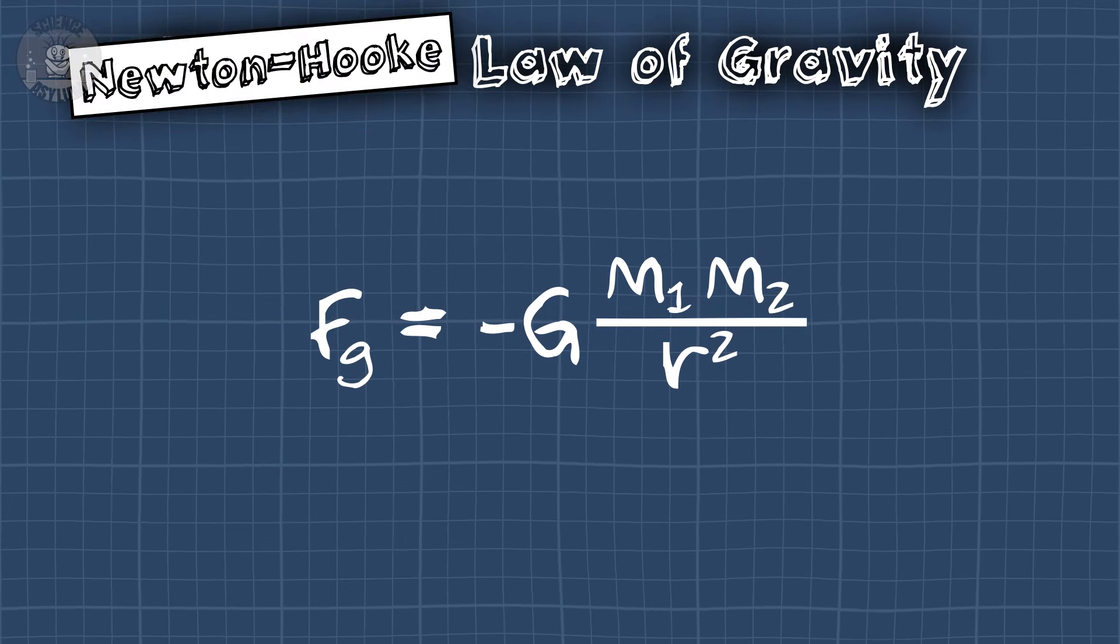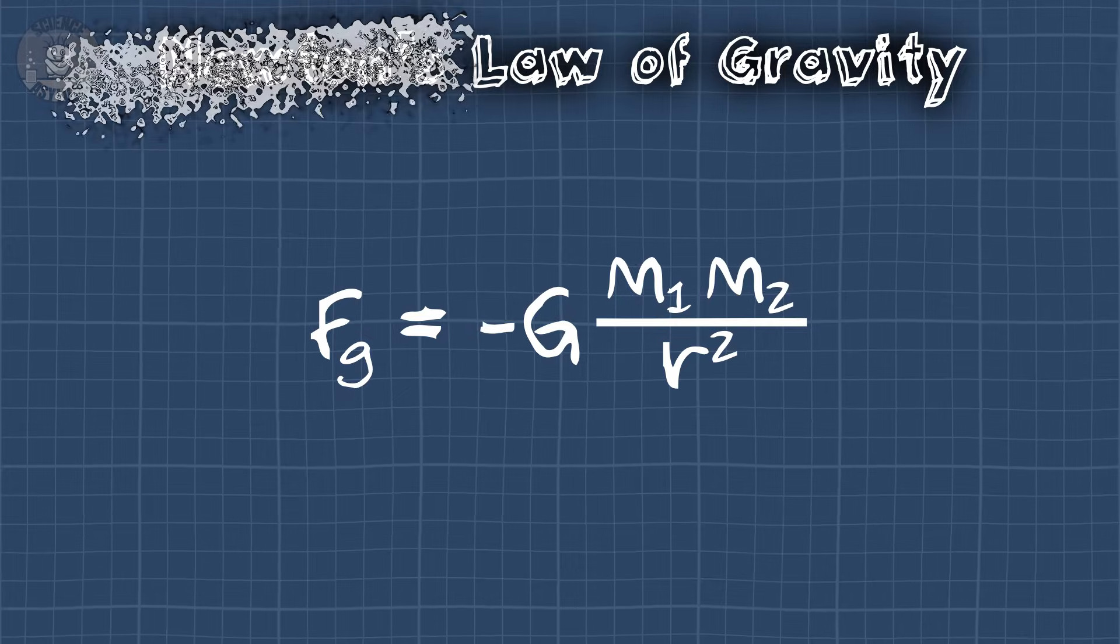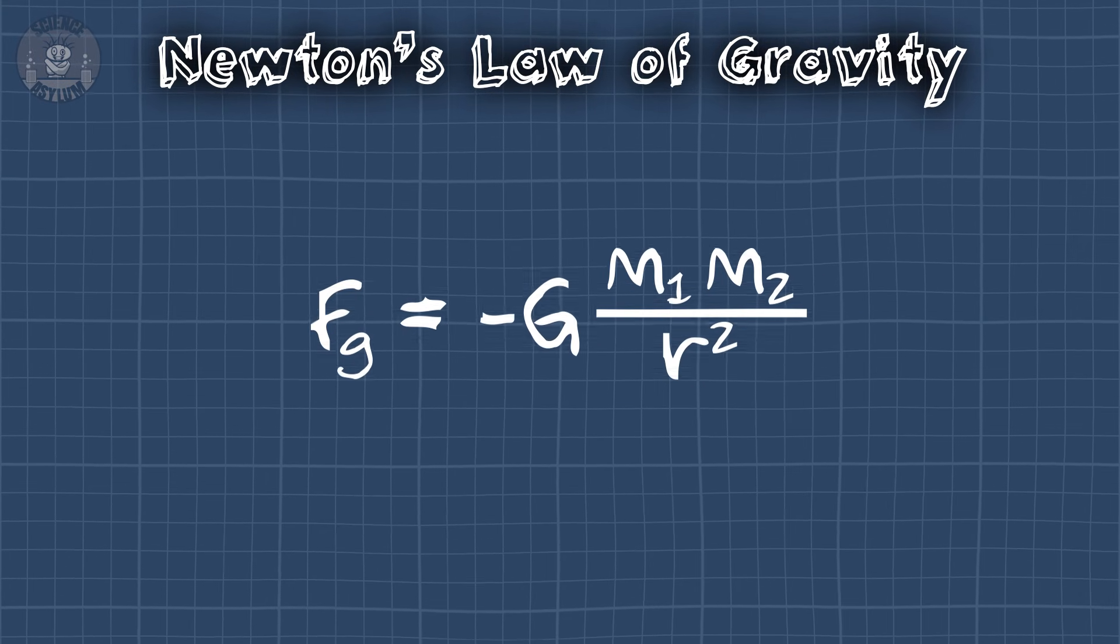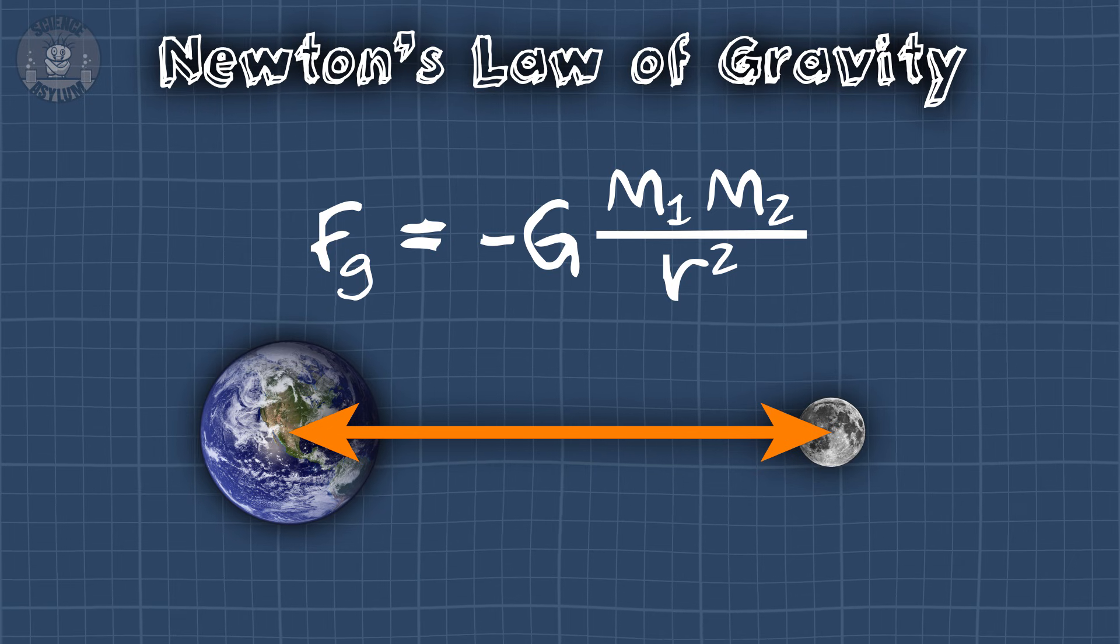It should really be called the Newton's-Hooke law of gravity, but history can be cruel and lazy sometimes. Anyway, notice the square in the bottom. The square of distance, just like before. Does that mean gravity flows away from a source? Nope, it does nothing of the kind. Then why is it an inverse square law?